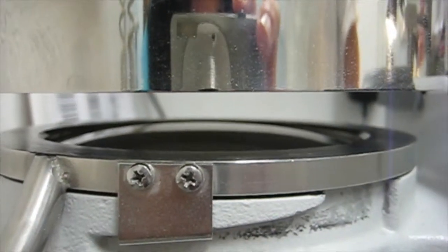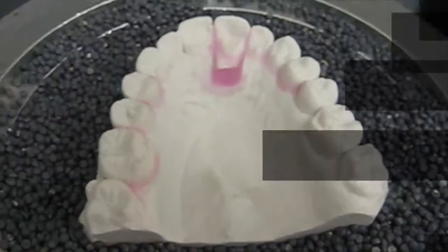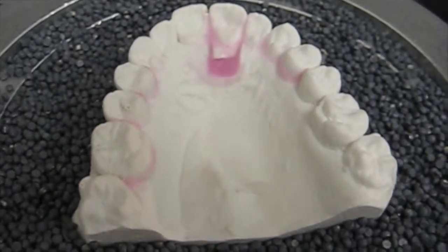We use this machine that actually heats up a sheet of plastic that will then get placed over the model.